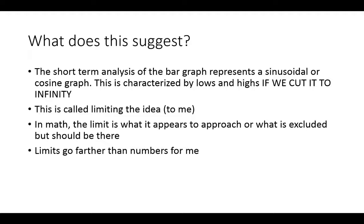In short-term analysis of the bar graph, a sinusoidal or cosine graph is characterized by lows and highs. If we cut it to infinity—if we were to scrunch it down and scrunch it down and limit the graph and make it smaller—it would look like the graph goes from top to bottom, top to bottom, top to bottom.